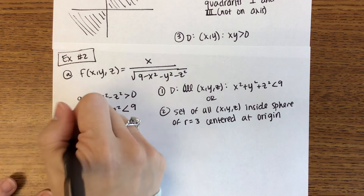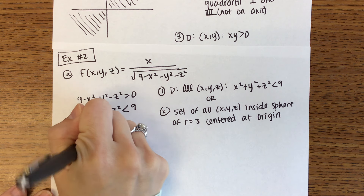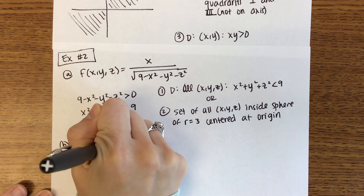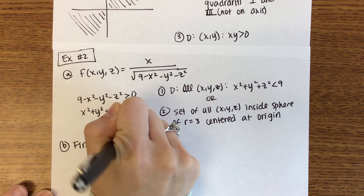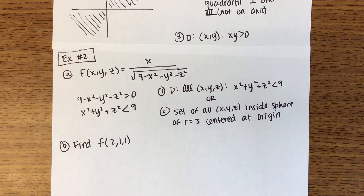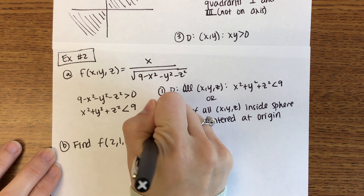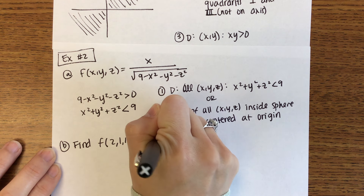Also with problems like this, you might be asked to find a specific value — for example, find f of 2, 1, 1. This should be pretty intuitive: plug in 2, 1, and 1. If you do that, you get 2 divided by the square root of 3.